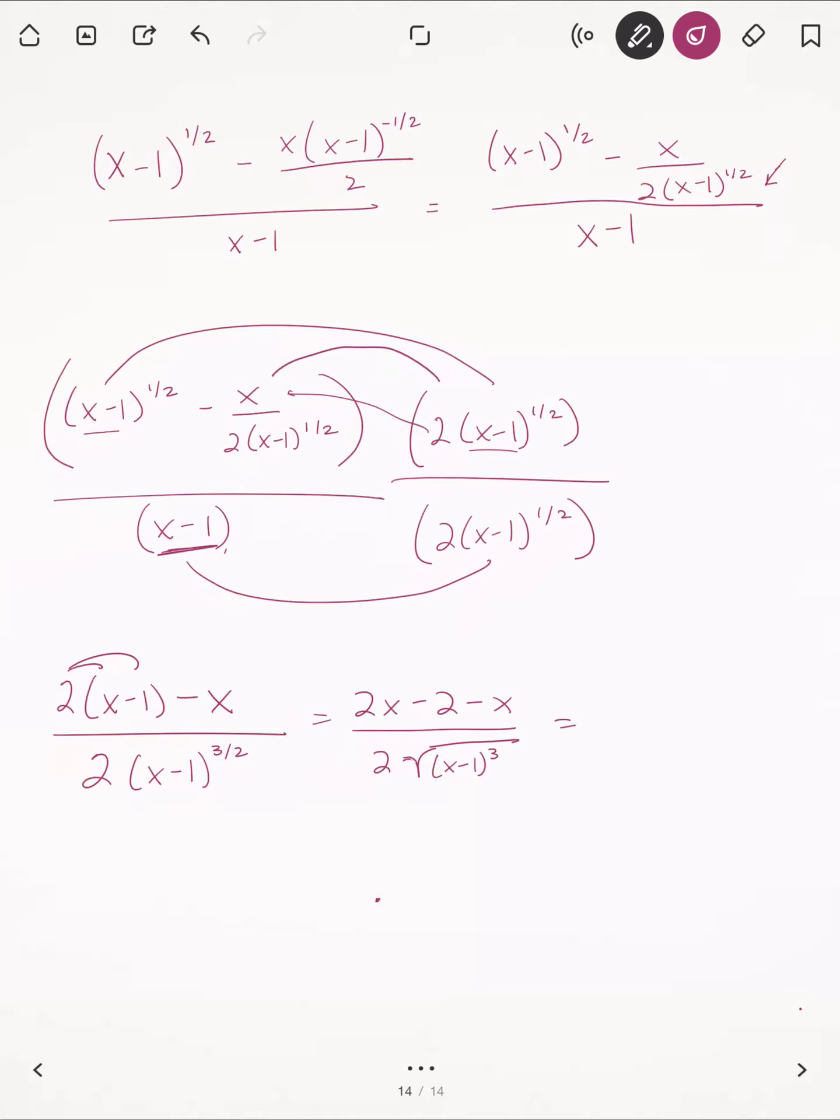Alright, well, 2x minus x is just x minus 2, that will go up top, over 2 times the square root. If we really wanted to clean this up, we could do 2 times x minus 1 times the square root of x minus 1, because it's to the 3rd power when I take the square root of x minus 1 squared, it's just x minus 1.